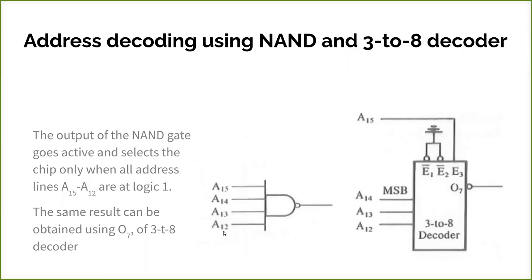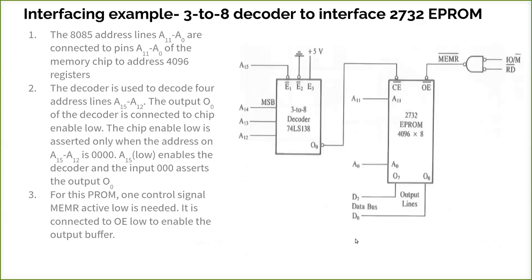The same result can be obtained using a 3-to-8 decoder. Here we have a 3-to-8 decoder - three inputs which will generate one single output among eight outputs, that is zero to seven. So here A15 is given for this enable signal. When all are one, this particular 3-to-8 decoder will be selected. Because of this input 111, this O7 output will be selected and when this is connected to a particular chip, that chip will be selected.